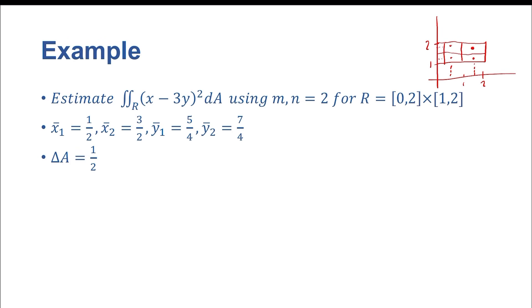So now we've got to find our delta a, and our delta a is going to be the length times the width. So the length here is 1, and the width here is 1 half. So we get delta a equals 1 half.